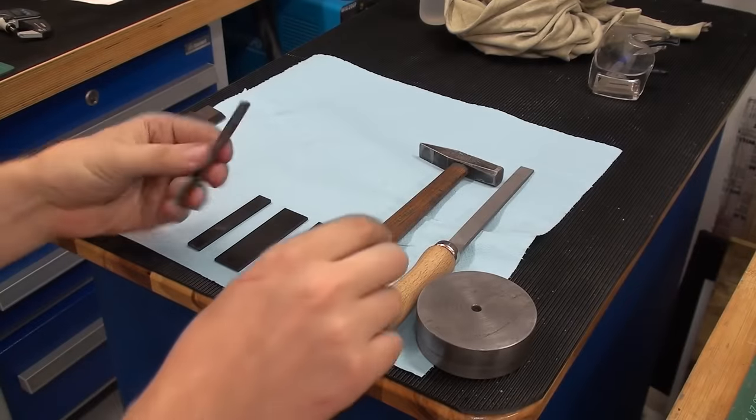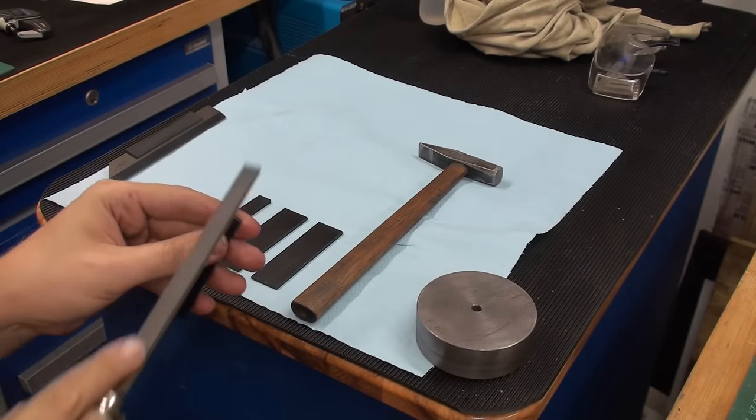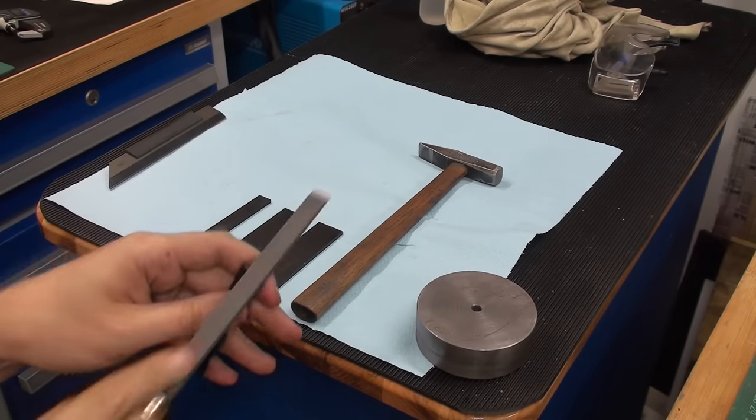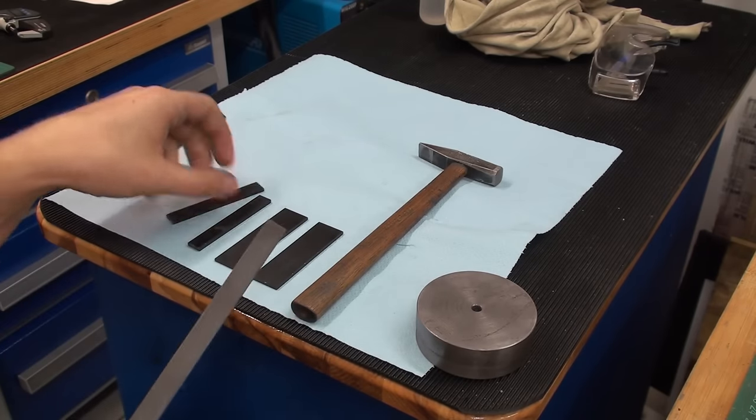I hardened the parallels and I am going to take a file. It skates right across it. These are now about 60 Rockwell hard.